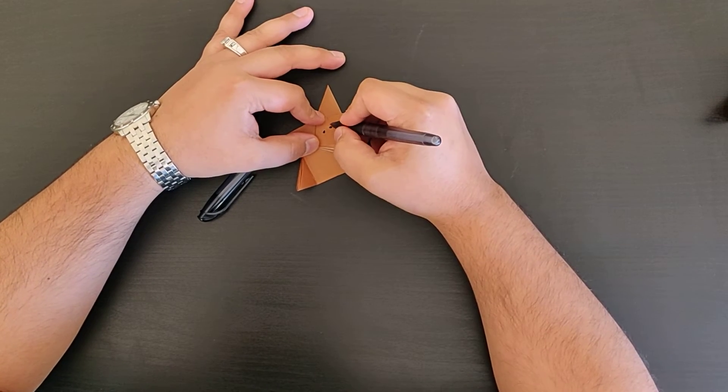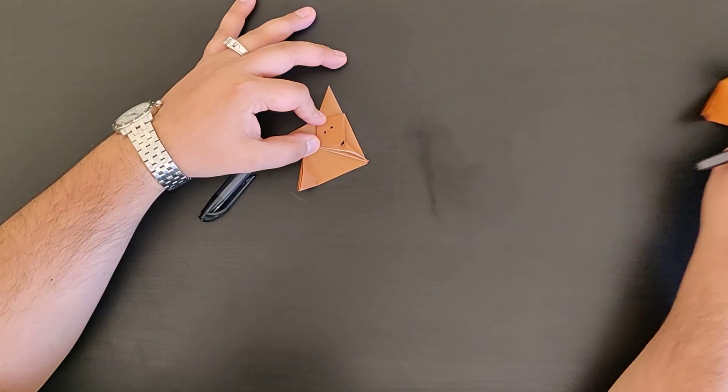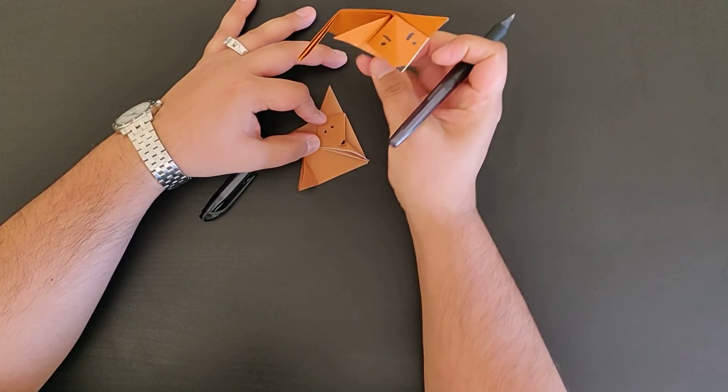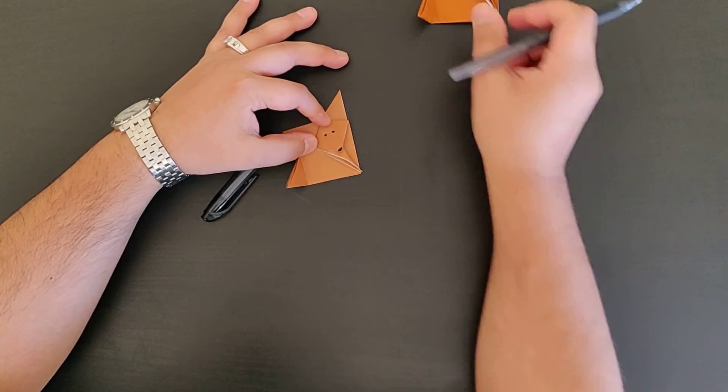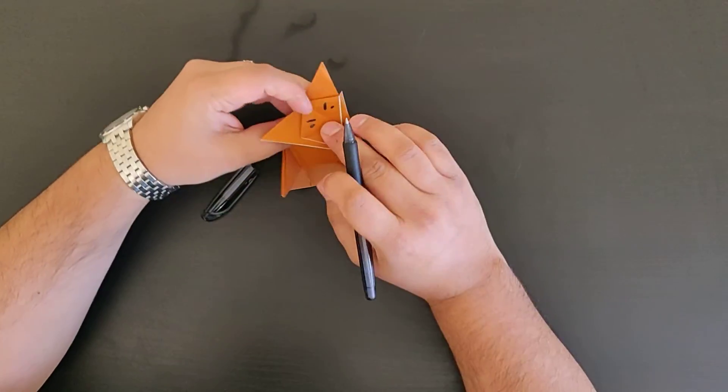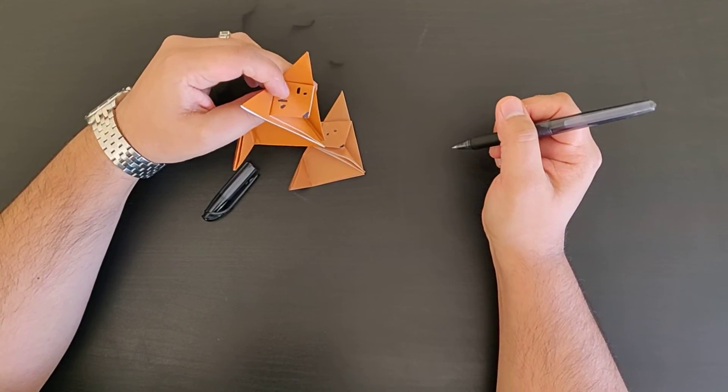Give it some eyebrows. Now the eyebrows are really good because they will give you, depending on what kind of eyebrows you draw, it'll give it that particular character. So with this one I've drawn them going downwards so he looks a little bit angry or mischievous.